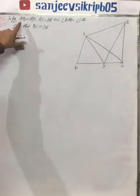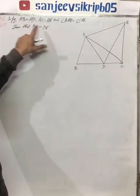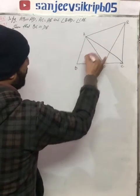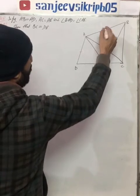So let's read the question before solving it. In this figure we are given AB is equal to AD, and AC is equal to AE.